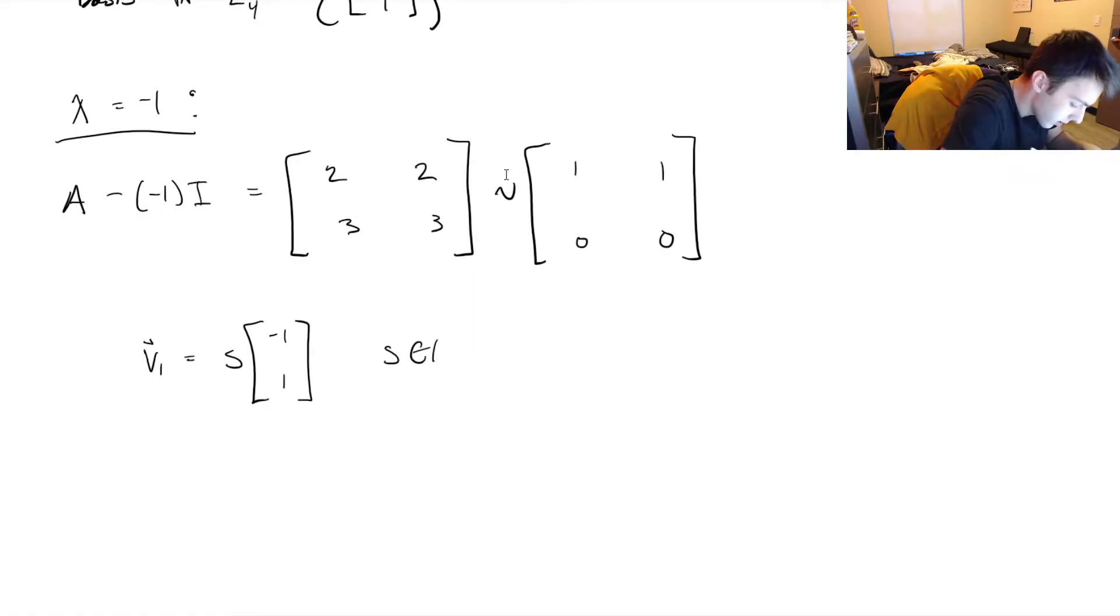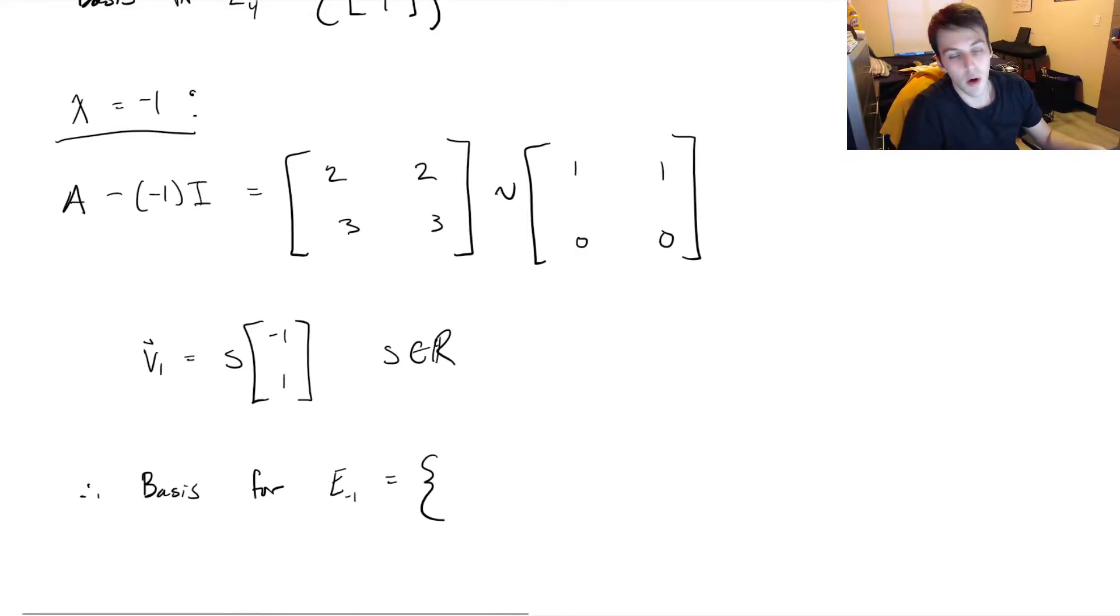So therefore, the basis for the eigenspace that corresponds to λ equals -1 would be equal to this vector, [-1, 1]. And in the next video, we're going to take a look at the process called diagonalization. And yeah, I guess that's it for this video. I will see you in the next one. Bye.